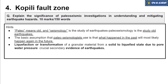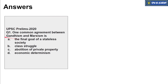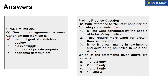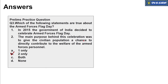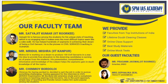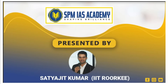Regarding yesterday's practice questions: on Gandhism vs Marxism, the final goal of stateless societies is common. On Millet, the first and third statements are correct — the second is wrong; millet requires less water. On Flag Day, the first statement is wrong — it has been celebrated since 1949, not 2015 — but the second statement is correct. That's all from our side for today. Thanks for watching.